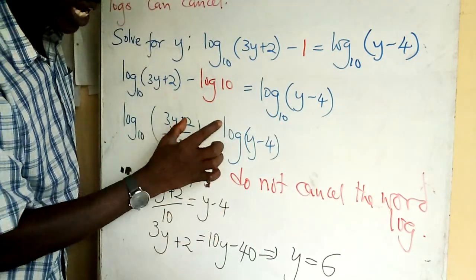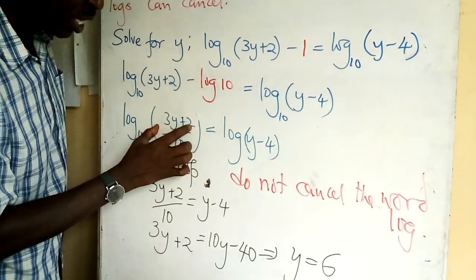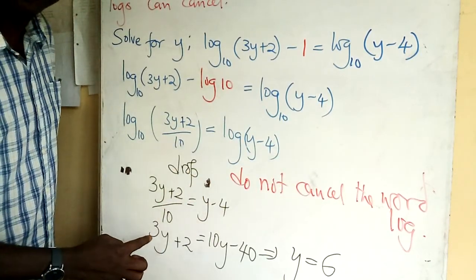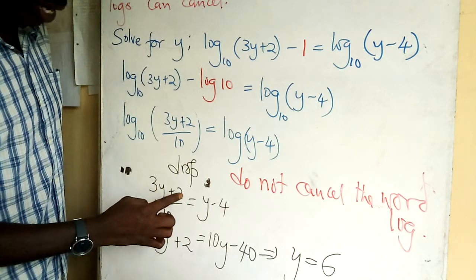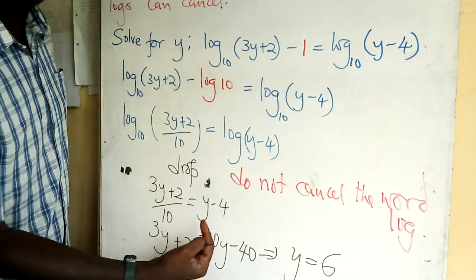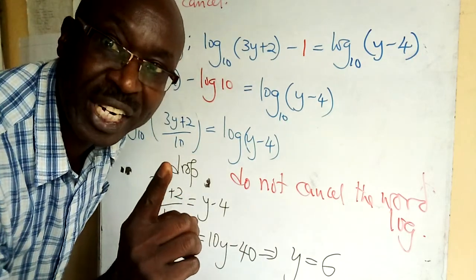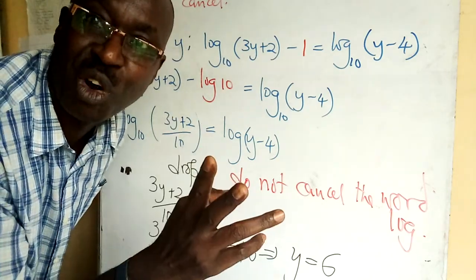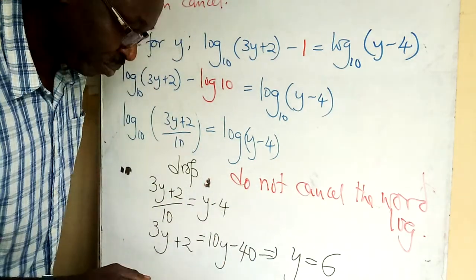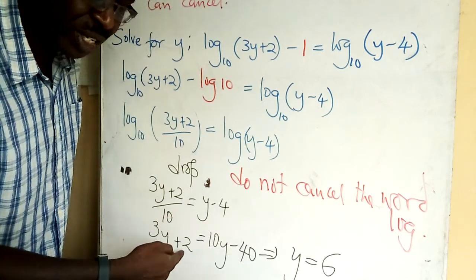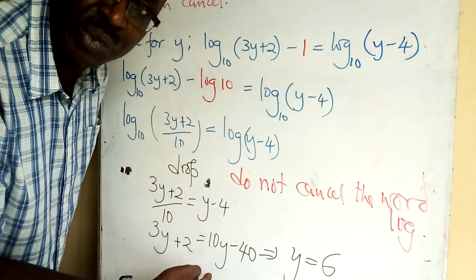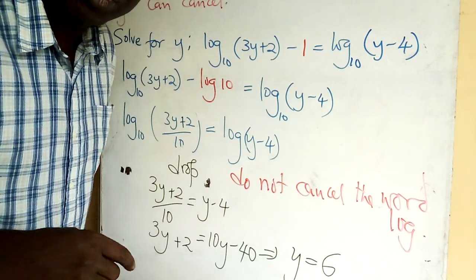10y minus 40. Big mistake - people write 10y minus 4. He fails to distribute that 10. So what do you do? This negative 40 comes here to give me 42. 3y goes that side to give me 7y. So y equals 6.